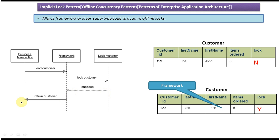The framework then returns the customer information to the business transaction. Once the lock is Y, no other business transaction can access this record and modify this information. The framework is responsible for maintaining the lock on that particular row.